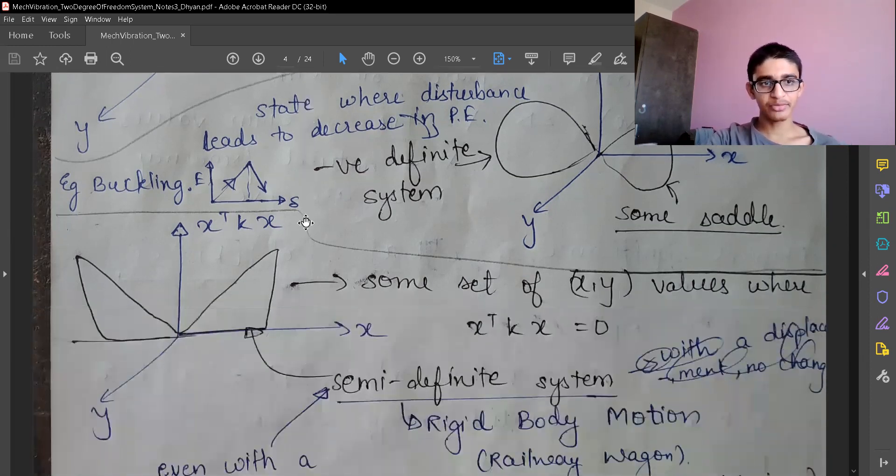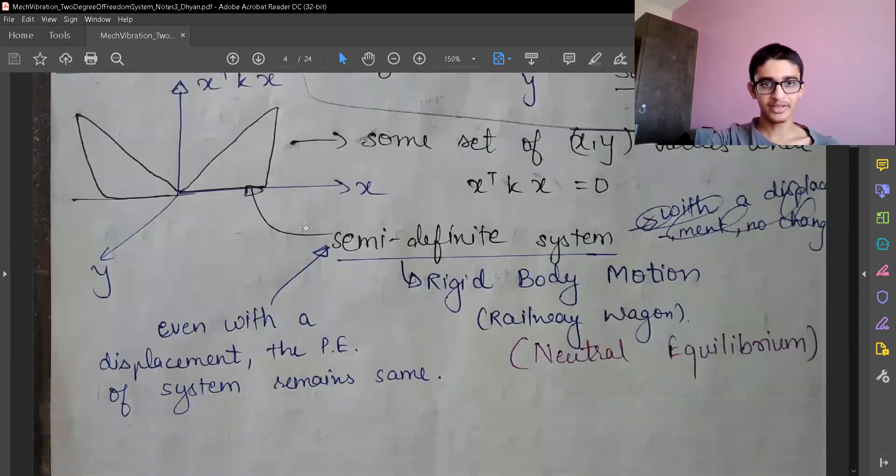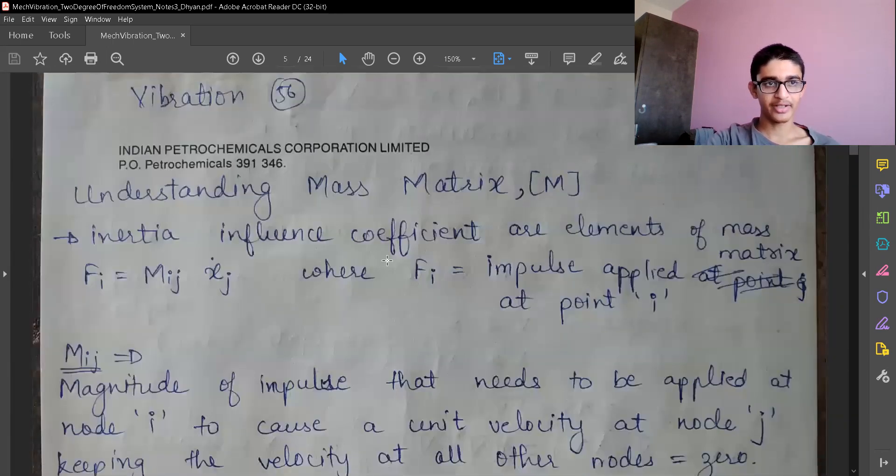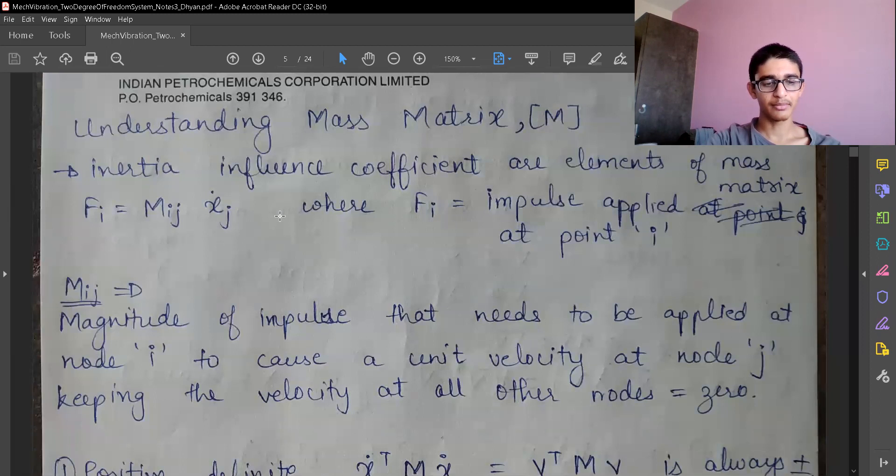We'll end over here. We have understood the three different kinds of matrices: semi-definite, positive definite, and negative definite. In the next video, we'll start with understanding the mass matrix. We'll stop over here. Thank you.